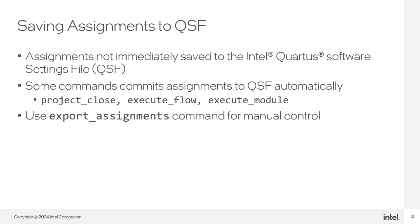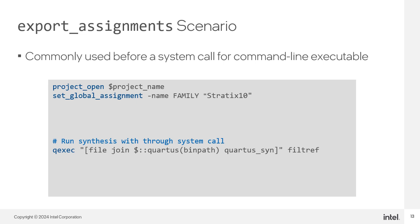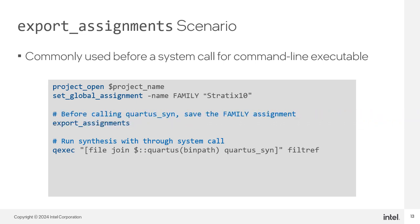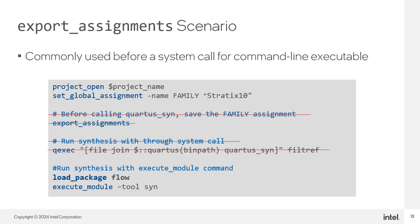You can use the export_assignments command to cause Intel Quartus Prime Software to write all assignments to the QSF at any time. The export_assignment command is typically used before running Quartus executables through system calls. For example, if we use set_global_assignment to set the family and then run quartus_syn through a system call, we must use export_assignments first to ensure the QSF has the new family assignment. On the other hand, if we use the execute_module tool syn command instead of the system call, we won't need to export assignments because execute_module will automatically commit settings to QSF.